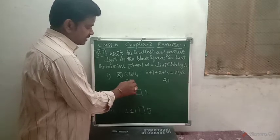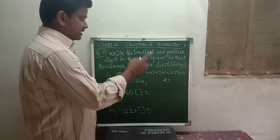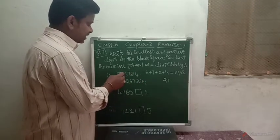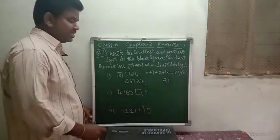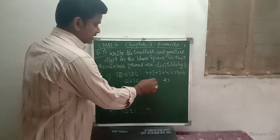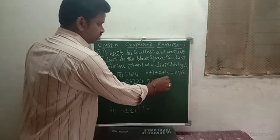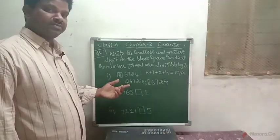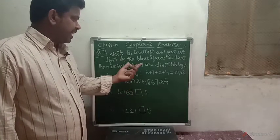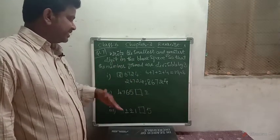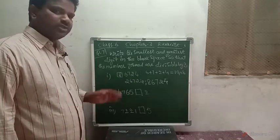2, 6, 7, 2, 4 is one number. And the second number is, you just write 8 here. Even if you write 8, this is also divisible by 3. So the second number is 8, 6, 7, 2, 4. This is the way we write the smallest and greatest digits, forming numbers which are exactly divisible by 3.